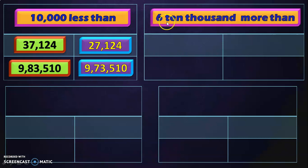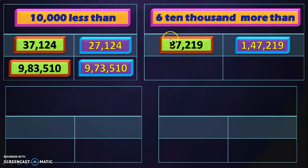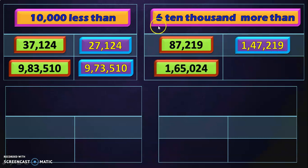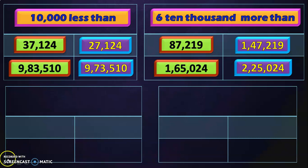The next question is 6 ten-thousands more than, which is 60,000 more than. These sums require a little calculation. So for 87,219: 60,000 more than this means adding 6 to the 10,000's place, which has 8, giving 14 — so the answer is 1,47,219. For 1,65,024: adding 6 to the 10,000's place digit 6 gives 12, so we write 2 and carry 1, giving 2,25,024. These cannot always be done purely by mental math for class 4, but children can manage with practice.